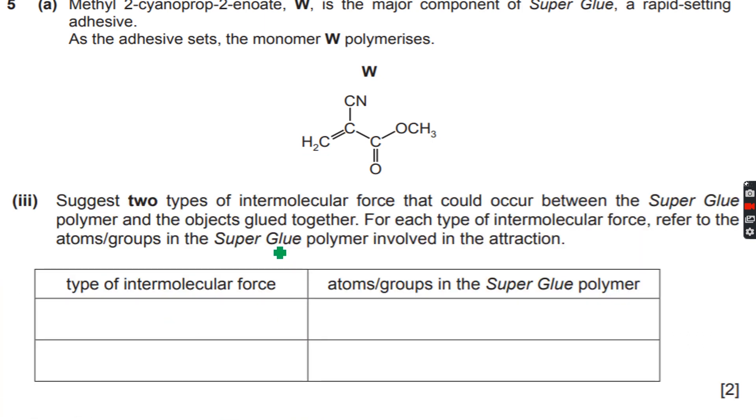Now let's erase this and move to the next question. There's two types of intermolecular forces that could occur between the superglue polymer and the objects glued together. For each type of intermolecular force, refer to the atoms groups in the superglue polymer involved in the interaction. Now we know there is an ester group, but not in the polymer chain. It's outside the polymer chain, branching from the polymer chain.